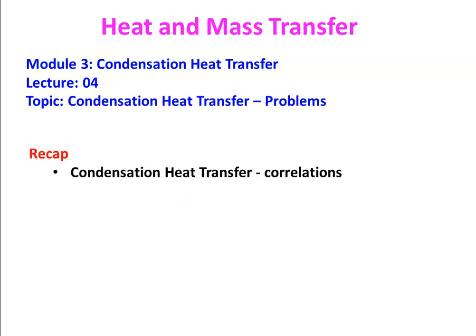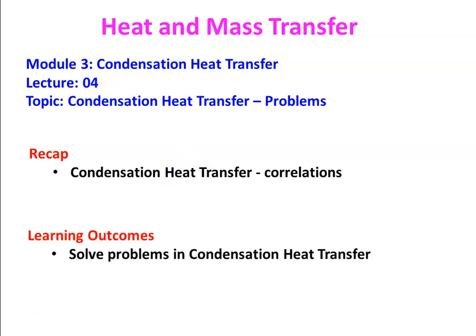In the previous session, we discussed the theory of condensation, film-based condensation, drop-wise condensation, and we have seen a few correlations for calculating heat transfer coefficient in film-based condensation for a vertical plate, horizontal plate, and tube bundle. Now using those correlations, we solve problems here. At the end of this session, the student will be able to solve problems in condensation heat transfer — that is the outcome for the session.